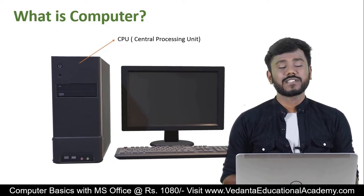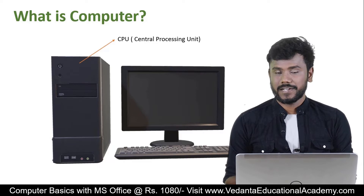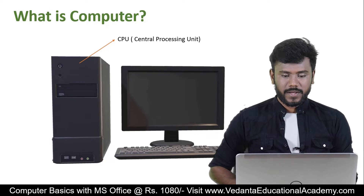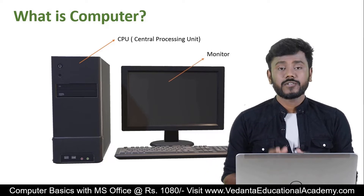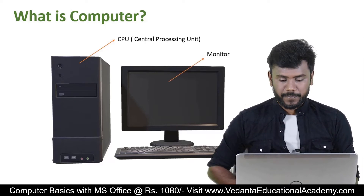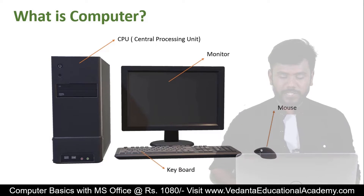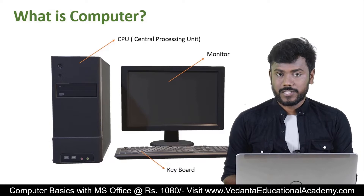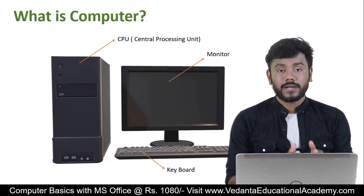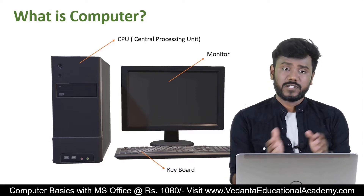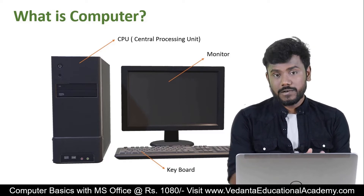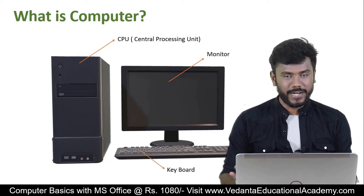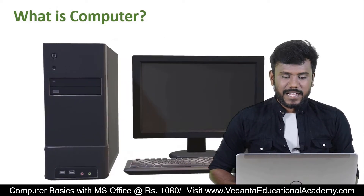The first main part is the CPU, the central processing unit, where data is processed inside the computer. We have a monitor to check the output, and we give input using the keyboard and mouse. So, a computer is an electronic device which takes input from keyboard and mouse, processes the data inside the CPU, and gives you output on the monitor.